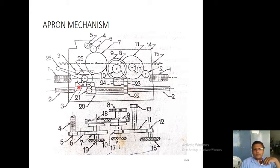And what is the function of apron mechanism? Apron mechanism is used to give carriage either manual feed or auto field.